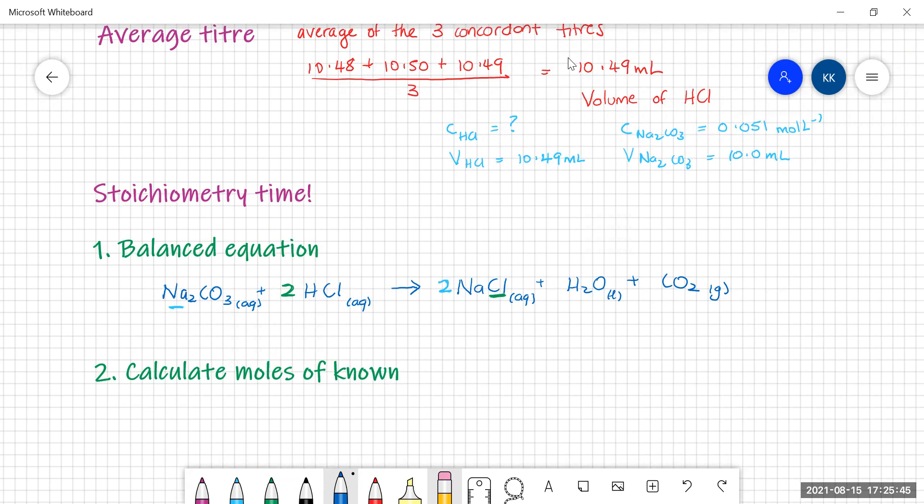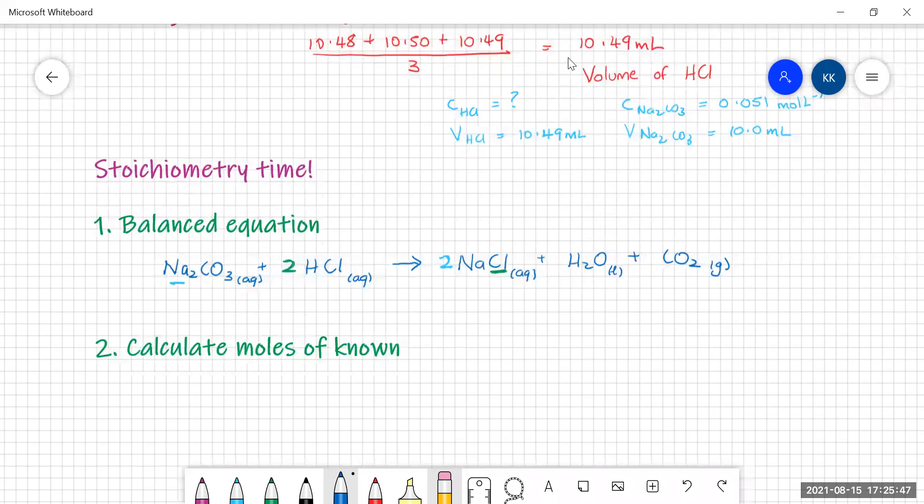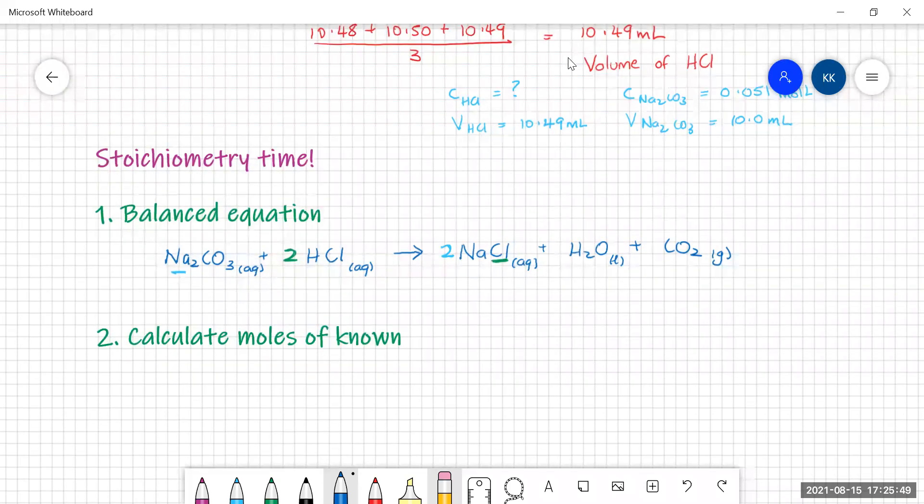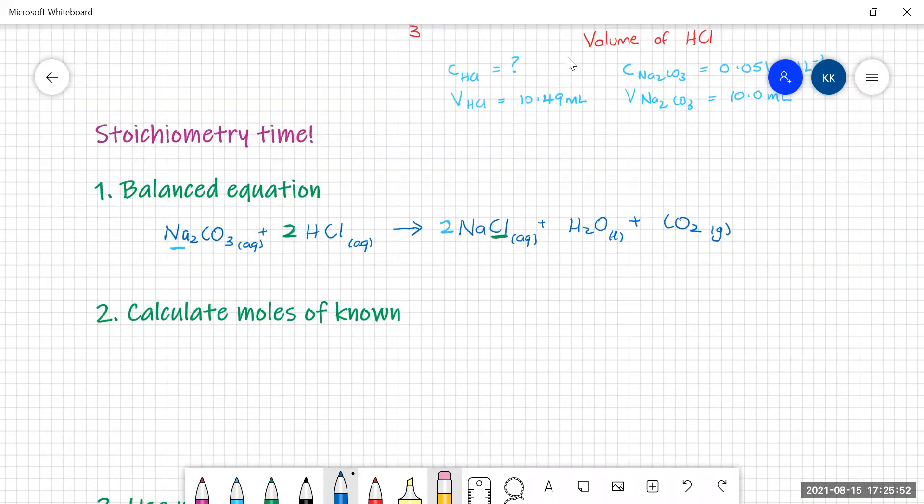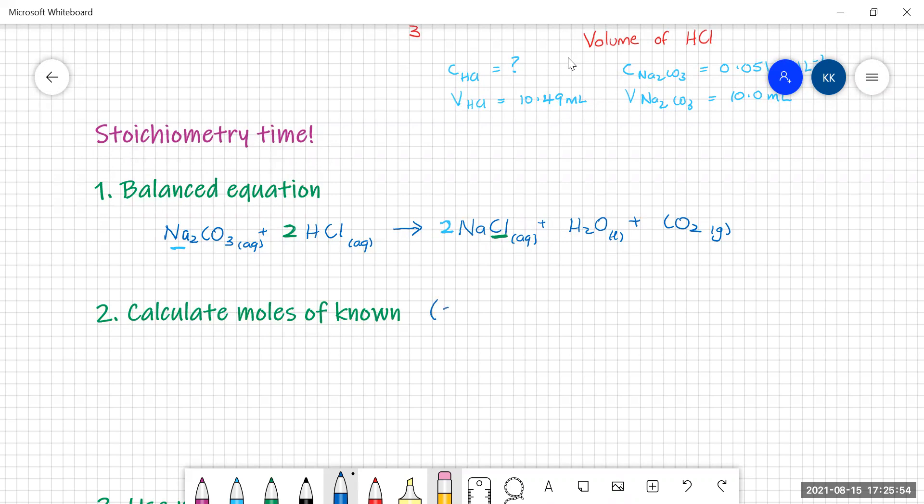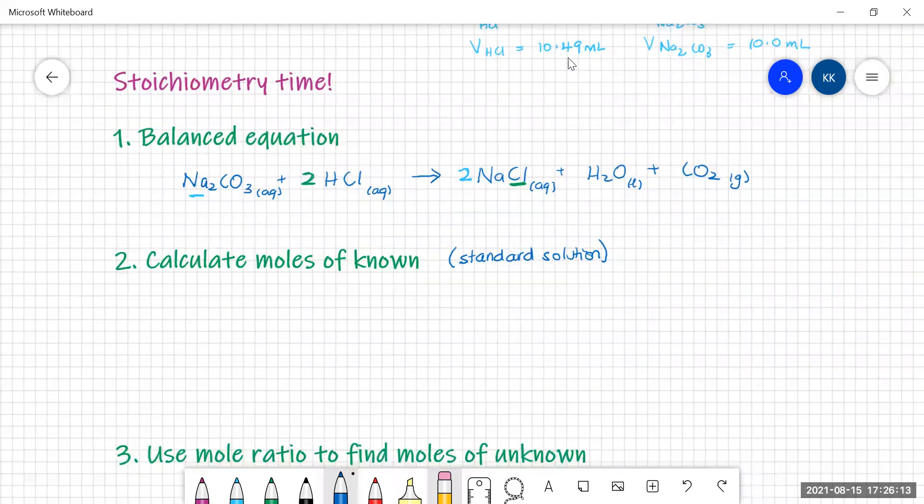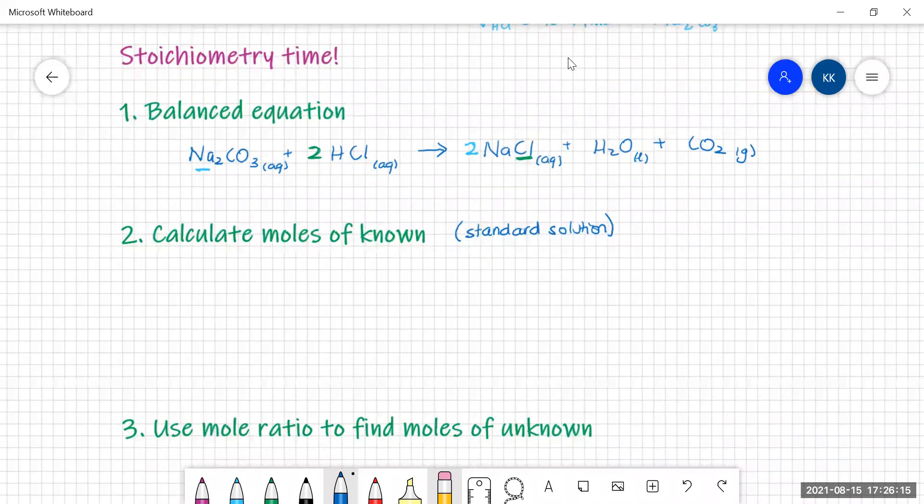On to step two. We need to calculate the moles of the known. Now you never have to worry in a titration where you're doing a standardization because the known is always going to be your standard solution. You made that solution of known concentration so that you could use it to standardize the hydrochloric acid.